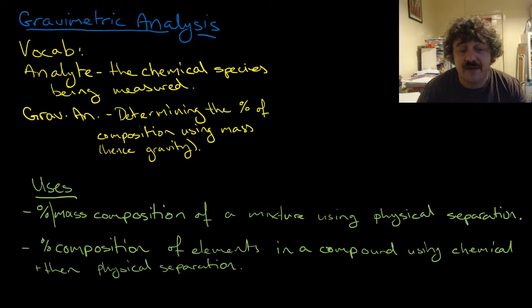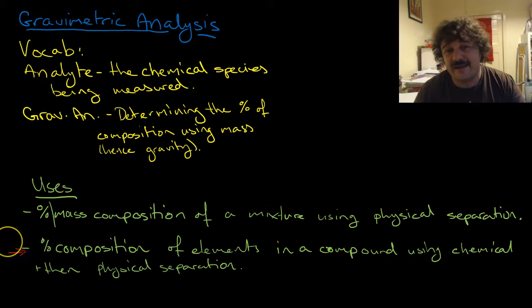We can look at the mass composition of elements in a compound, and that's actually the most interesting part as far as I'm concerned. It's not the example we'll go with today. We'll go with a simple example, and there'll be a more detailed example in a later video - mass composition of elements in a compound using chemical and then physical separation.